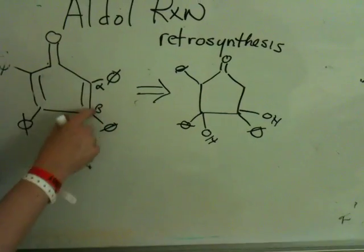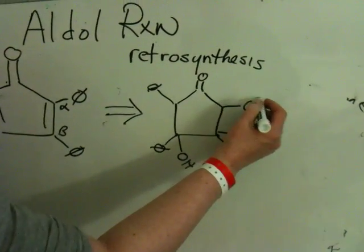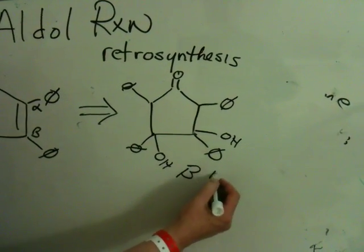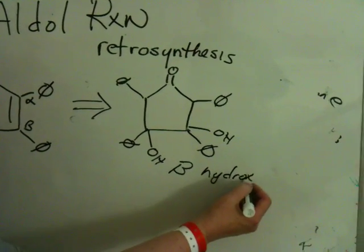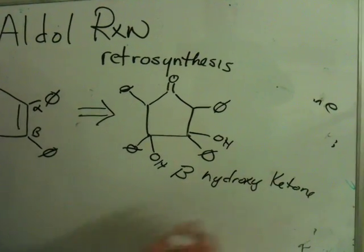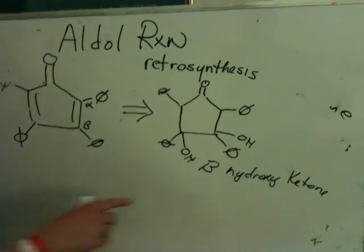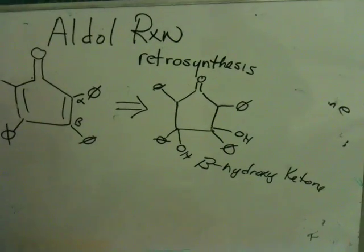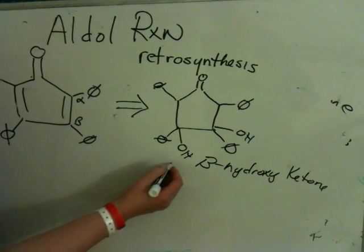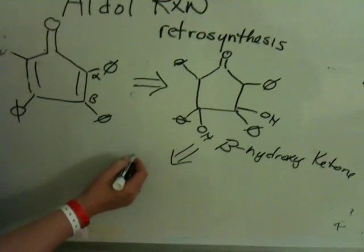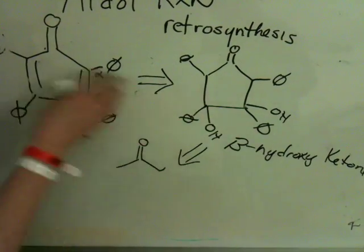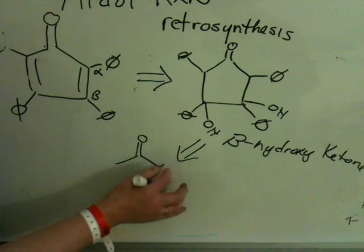This is the alpha-beta unsaturated ketone. This is called a beta-hydroxy ketone. I still maintain that half of organic chemistry is knowing the language. When you don't know the language, you don't know what I'm talking about. So what's the precursor to this? The precursor would be an Aldol reaction. When this kind of structure exists, it suggests the use of an Aldol.